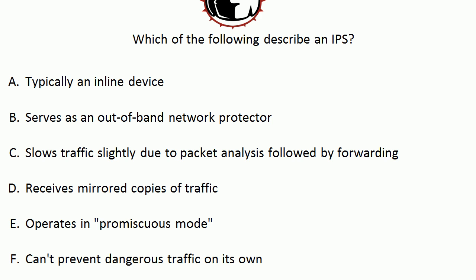Choice D — it receives mirrored copies of traffic — describes an IDS to a T, as does choice E — operates in promiscuous mode — because promiscuous mode and out-of-band are really the same thing. They're not directly in the line of fire. Mirrored copies of the traffic are sent to an IDS and analyzed there; they're not analyzed immediately as they come in on the original device.